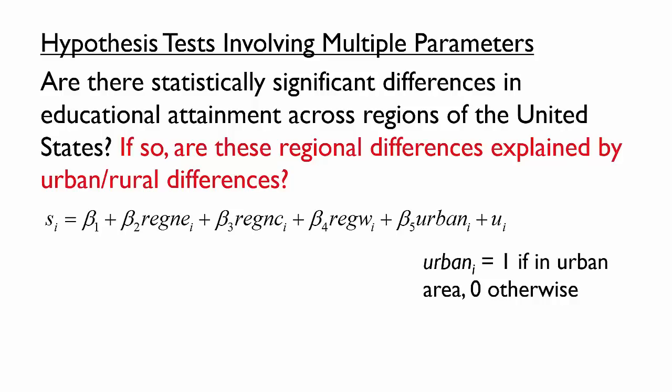Here is a model that includes both the region dummy variables and the new urban variable. Could we conduct a hypothesis test that corresponds to the statement of interest? If Beta-2 equals 0, then there is no difference in educational attainment between the Northeast and the South, holding urban versus rural constant — that is, individuals in the Northeast and individuals in the South who live in the same type of area tend to have the same level of education. Similarly, if Beta-3 and Beta-4 also equal 0, then there are no differences in educational attainment across any of the regions holding urban constant. This matches the question: if there are no differences across regions after we control for urban versus rural, then the urban-rural differences explain the regional differences.